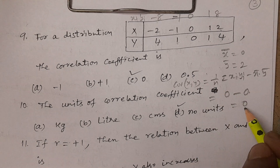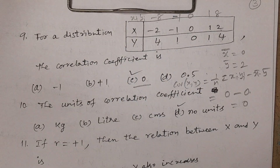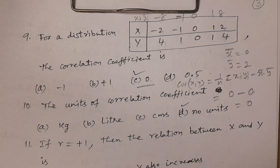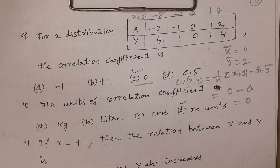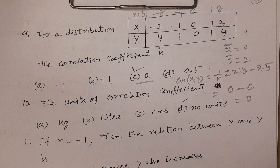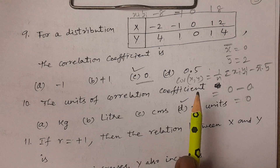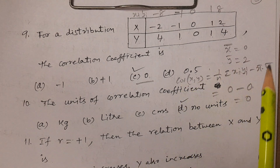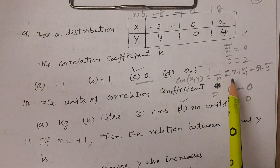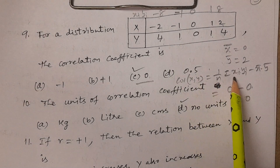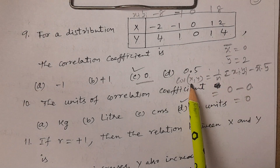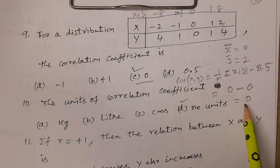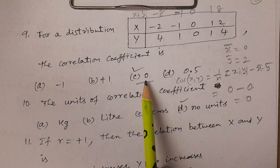The covariance formula is: covariance of x y equals one by n times summation xi yi minus x bar times y bar. Since summation xi yi is zero and x bar is zero, covariance of x y equals zero. Therefore r equals zero.